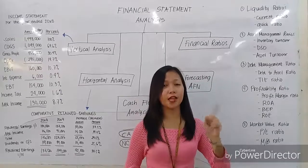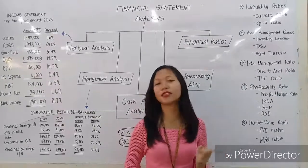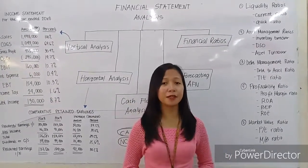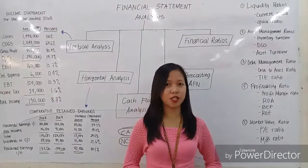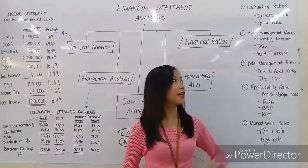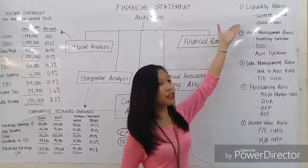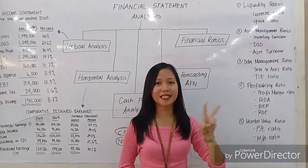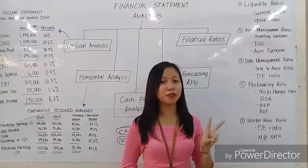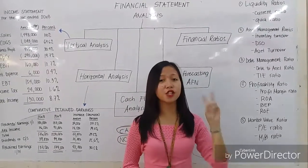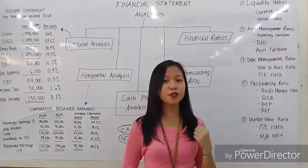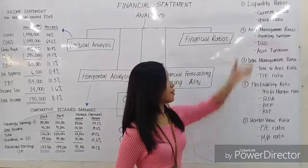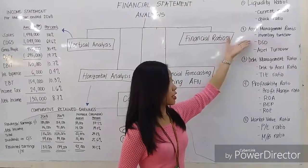The first category is the liquidity ratio, which shows the ability of the firm to pay off its currently maturing obligations, such as the current ratio and the quick ratio. The second category is the asset management ratio, which shows how efficiently the firm is using its assets, like the inventory turnover ratio.